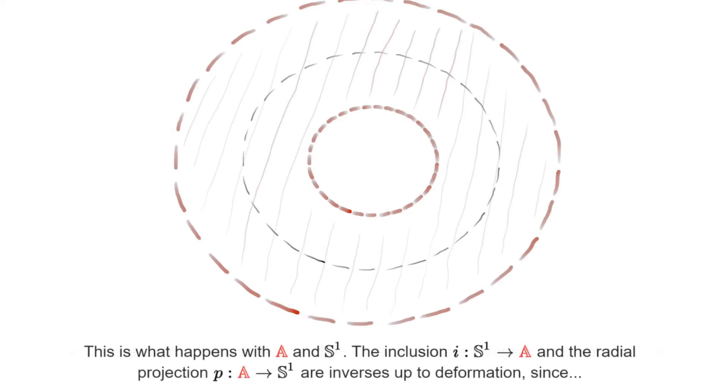This is precisely what we see with the annulus and the circle. Given S1, we can simply consider its inclusion into the annulus, and conversely, given the annulus, we can radially project it to S1. You should pause the video and convince yourself that the maps I and P define a homotopy equivalence between S1 and A.